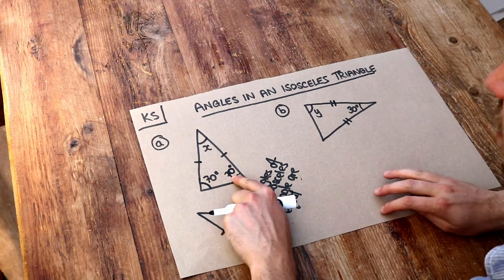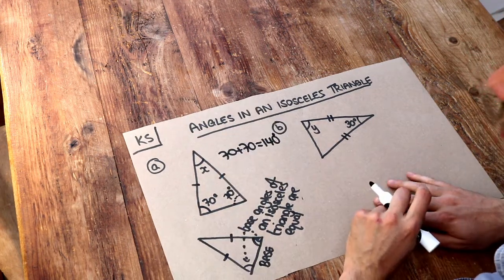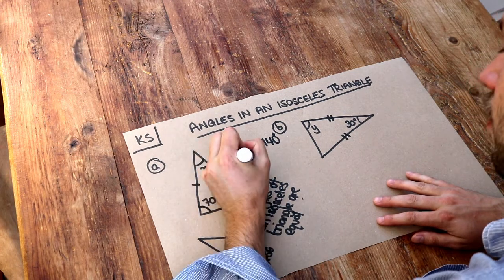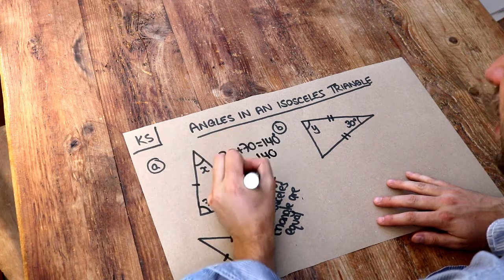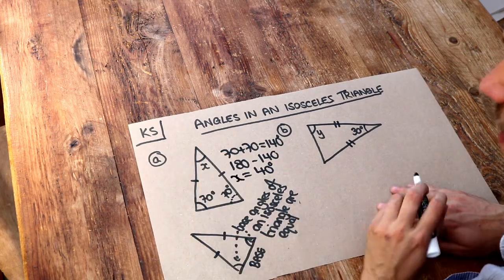So 70 plus 70 is 140 and then because angles add up to 180 in a triangle we just do 180 minus the 140 and that gives us an angle of 40 degrees. So that is x.